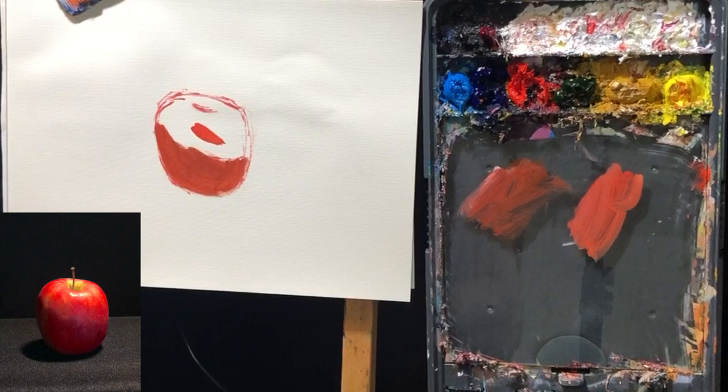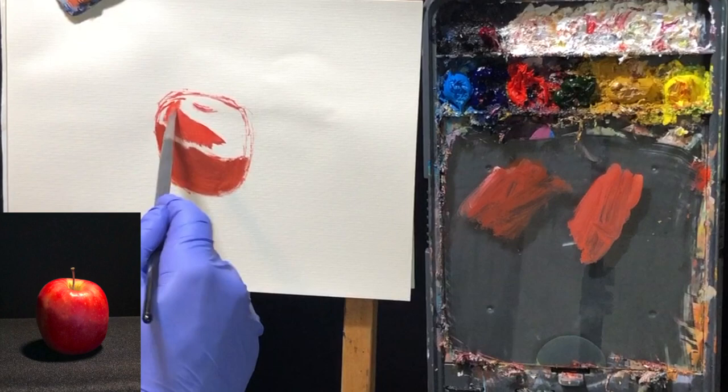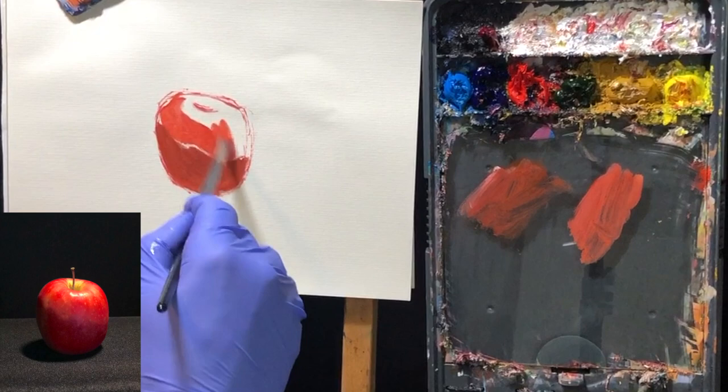Now I'm going into the lighter parts, mixing up some cad red, adding a little yellow, a little titanium white. And I don't work on one particular area at a time to completion, then move on to the next area. I really work it all as a whole. I find that to be very helpful.